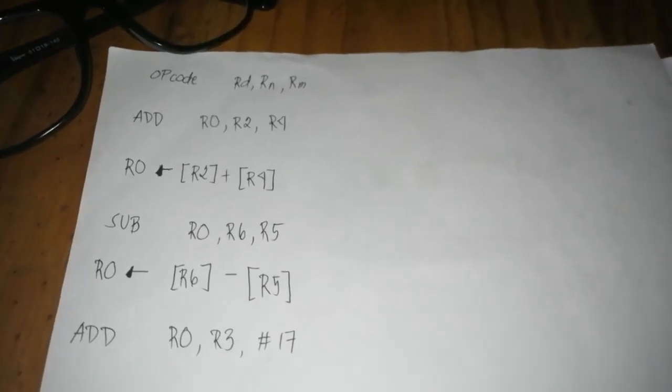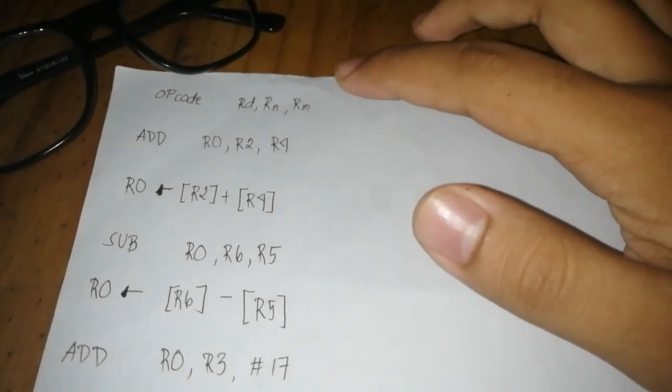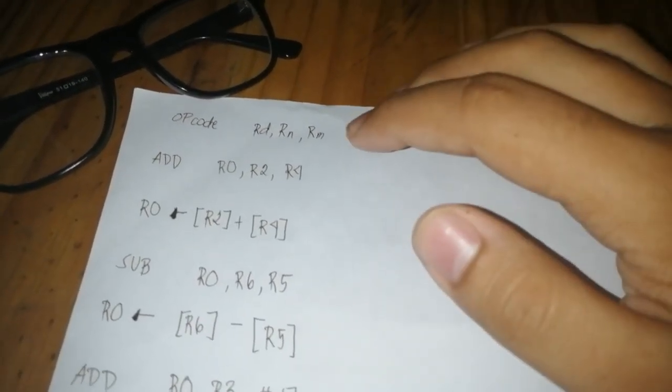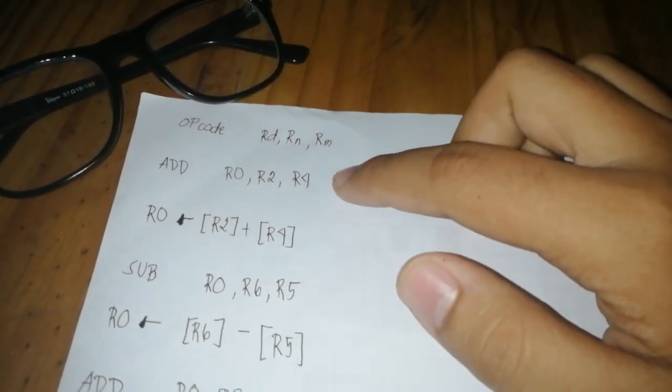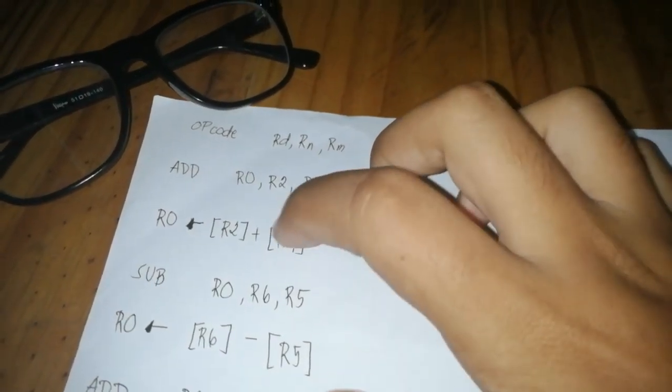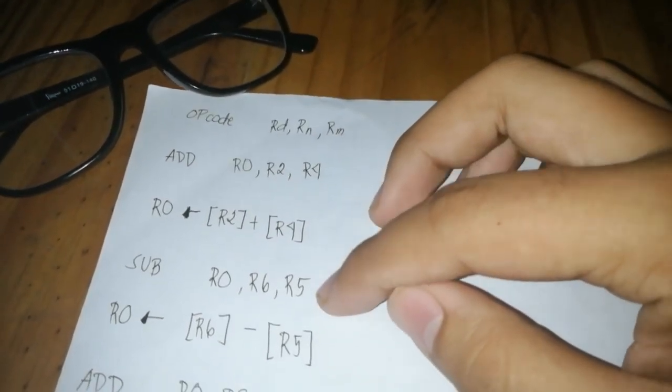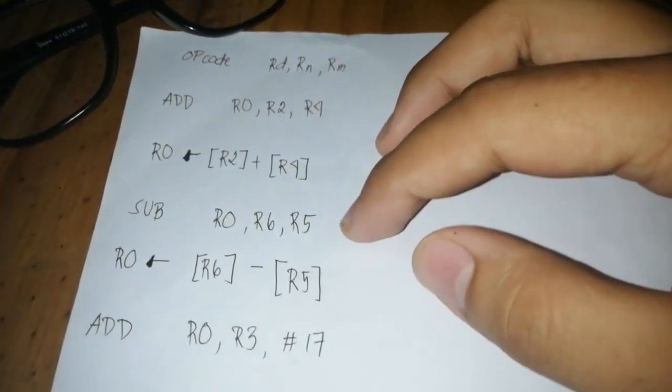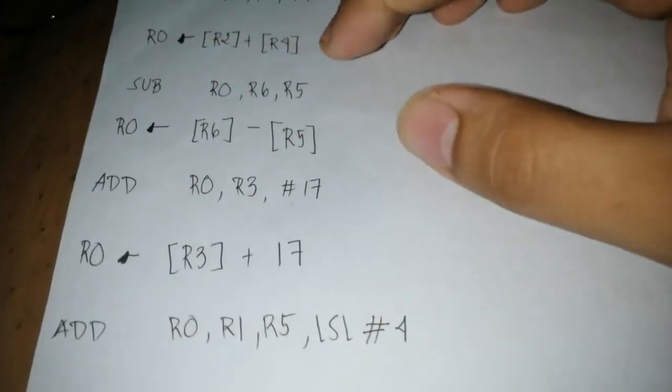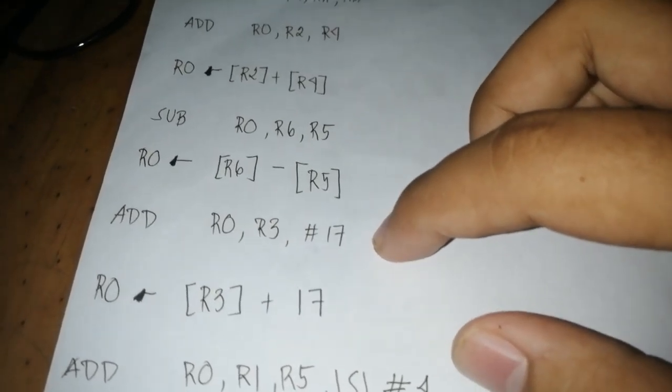Here I'll show you an example of arithmetic instruction with code RD, RN, and RM, where you will add R2 and R4. So this is R2 plus R4 will be the value of R0, and you'll subtract R6 to R5, and the value of the two will go to R0. Same instructions here, R3 plus 17.